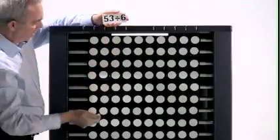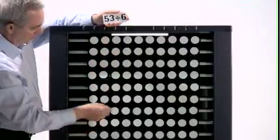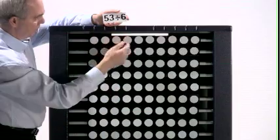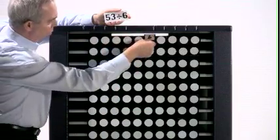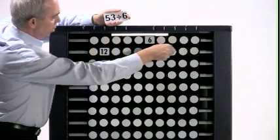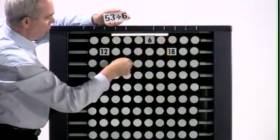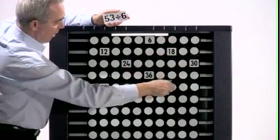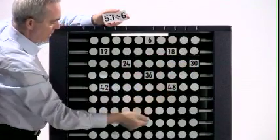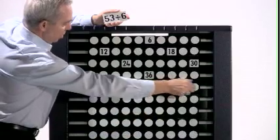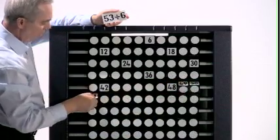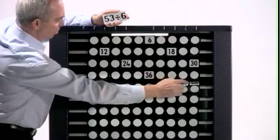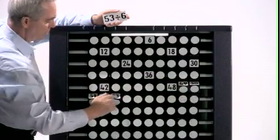53 divide by 6. 53 lives here. Divide by 6. 1, 2, 3, 4, 5, 6, 7, 8. Remainder 1, 2, 3, 4, 5. 8, remainder 5.